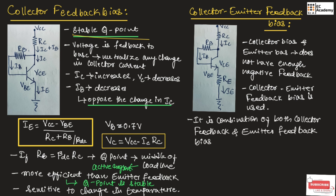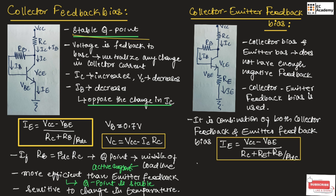Using only collector feedback or only emitter feedback biasing does not provide enough negative feedback. That's why collector emitter feedback circuits are used. The emitter current can be given as IE is equal to VCC minus VBE divided by RC plus RE plus RB divided by beta DC. The emitter voltage VBE can be given as VBE plus 0.7V, and voltage VEC can be written as VCC minus IC times RC.